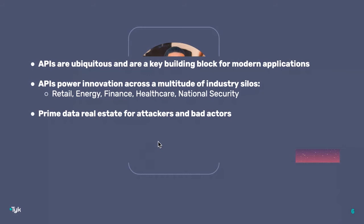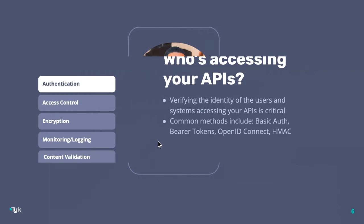I'd like to talk through some key concepts and best practices when securing an API. First: authentication. Who's accessing your APIs? Are you verifying the identity of users? You can't possibly secure an API if you don't know who's accessing it. All APIs need to be authenticated — including internal APIs that only core developers know about. Don't think that just because an API is not published or documented that it's not vulnerable. Common methods include basic auth, bearer tokens, OpenID Connect, HMAC, and more.